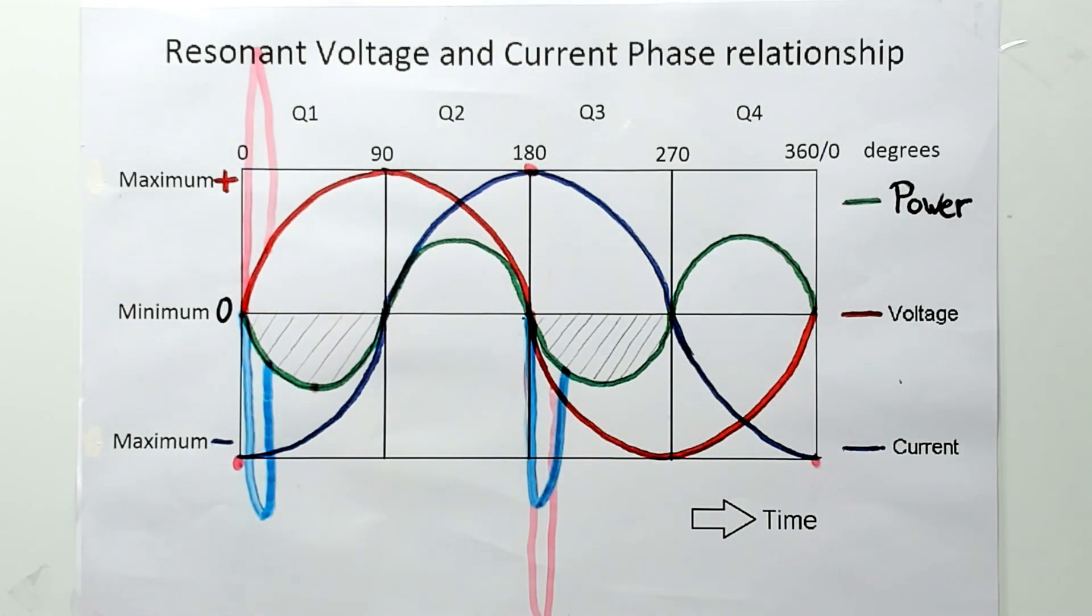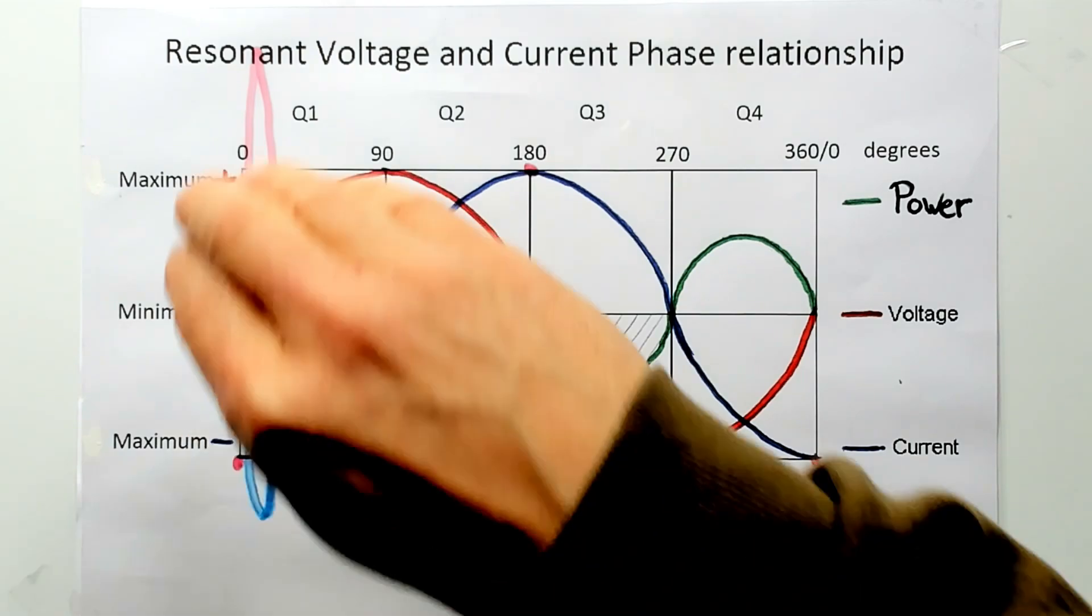So now we are providing the impulse with power. Or vice versa. We are providing the resonant coil with power. This is only on the moment of that impulse.